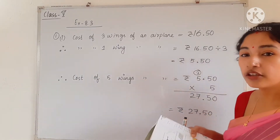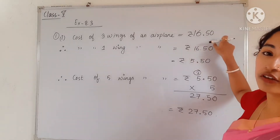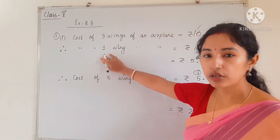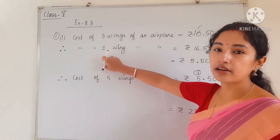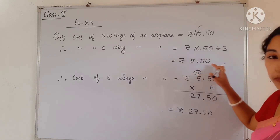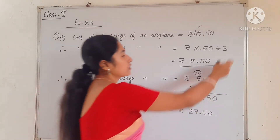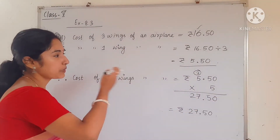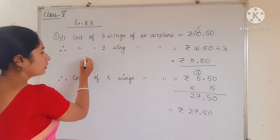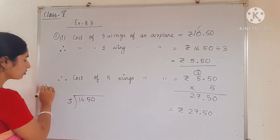The given condition is: cost of 3 wings is rupees 16.50 — 16 is in rupees and 50 is in paise. The cost of 1 wing: we use the unitary method since we are finding for 1. We divide by 3, and the working must be shown in your copy. Dividing 16.50 by 3 gives rupees 5.50.